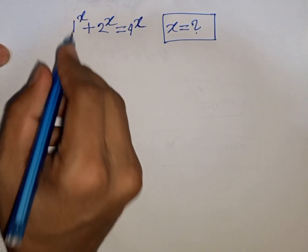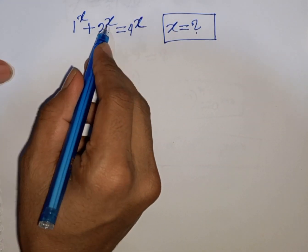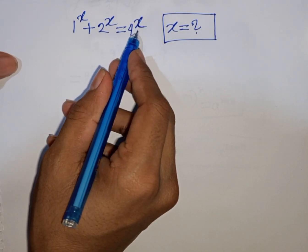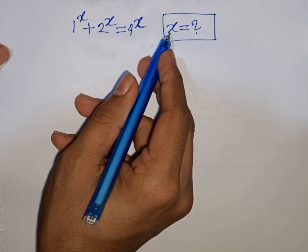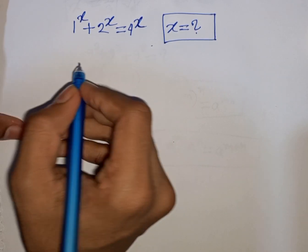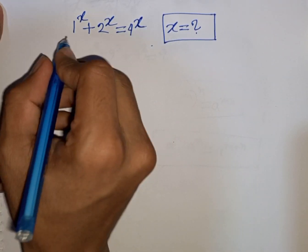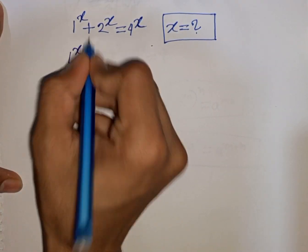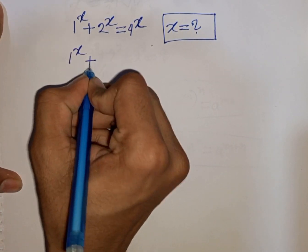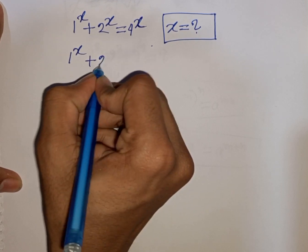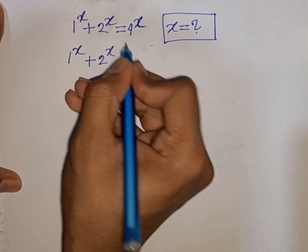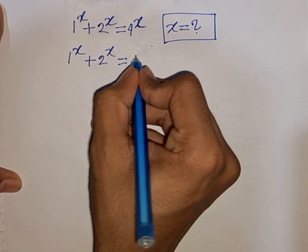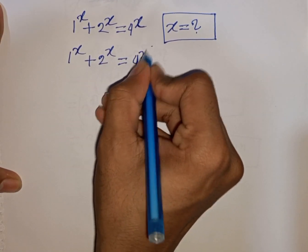How to solve 1 power x plus 2 power x is equal to 4 power x. Find the value of x. So we have 1 power x plus 2 power x is equal to 4 power x.